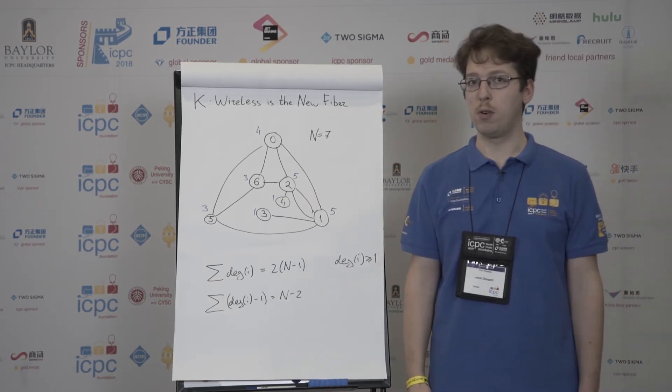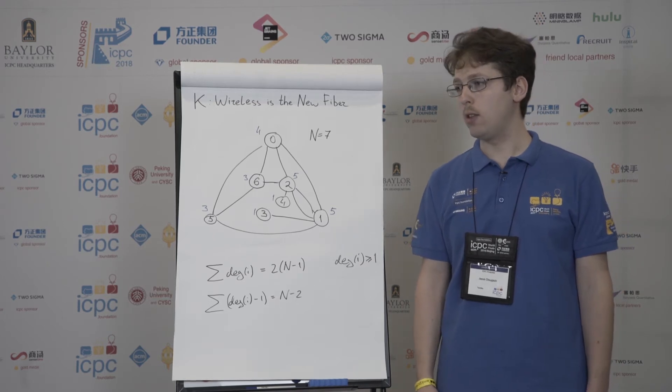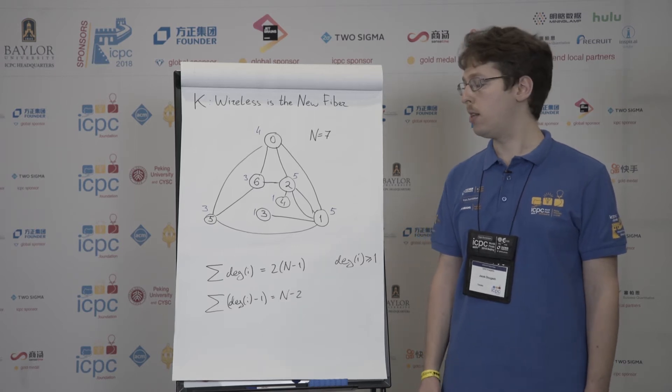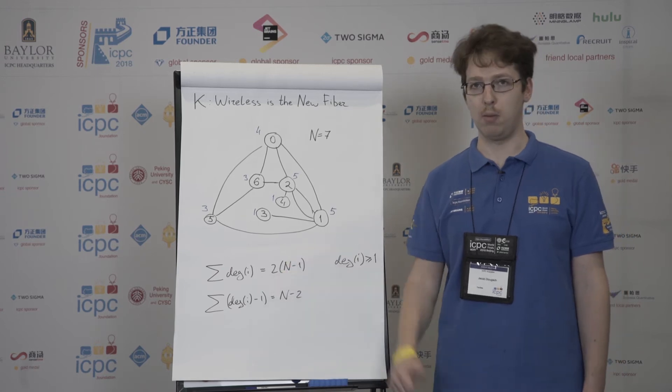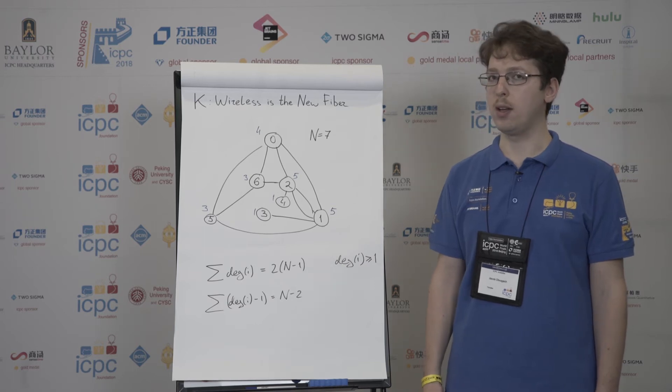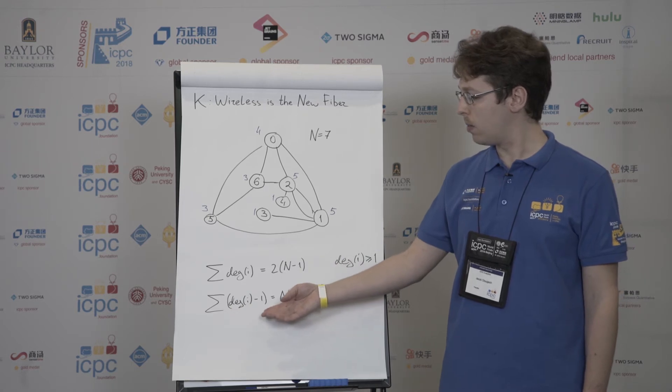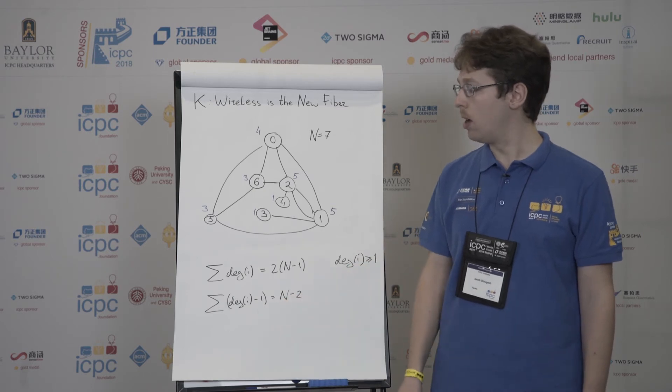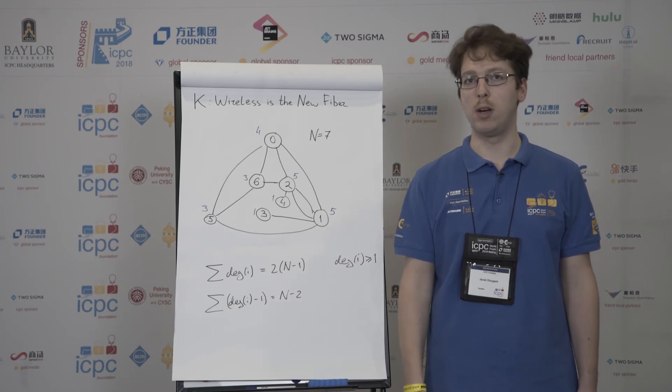So one property of any tree that we need to use here is that any tree of size n has n-1 edges. That means that total degree of all its vertices is 2 times n-1. Since any degree of a vertex should be at least 1, we may easily notice that if we just subtract 1 from degrees of all vertices, then the sum of those values should be n-2.